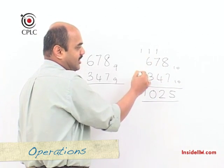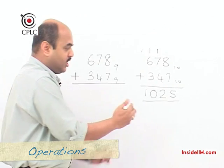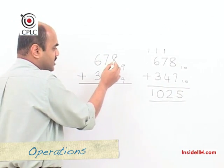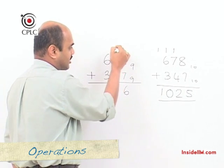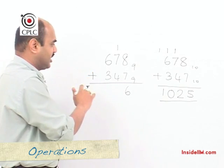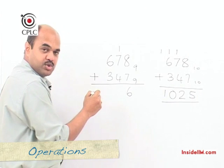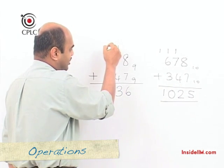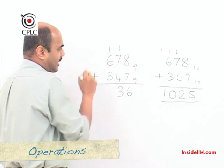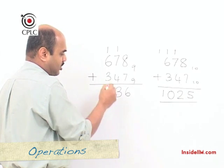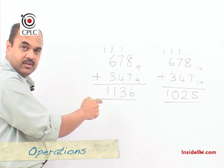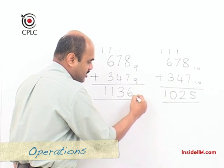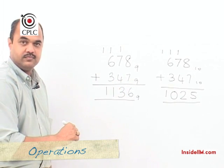This is the logic of carry-over in our normal decimal number system. If I replicate this logic for base 9: 8 plus 7 is 15, which is 6 more than the base of 9, so I write 6 and carry over 1. Then 7 plus 4 is 11, plus 1 is 12 — that's 3 more than 9, so I write 3 and carry 1. Then 6 plus 3 is 9, plus 1 is 10 — that's 1 more than 9, so I write 1 and carry 1, bringing that 1 down. So 678 plus 347 in base 9 gives the answer 1136 in base 9.